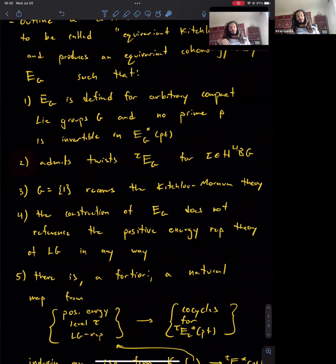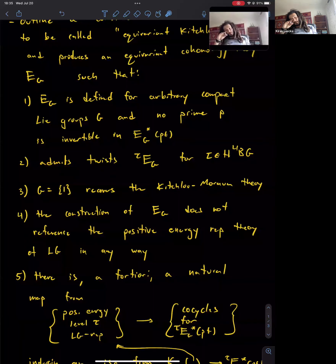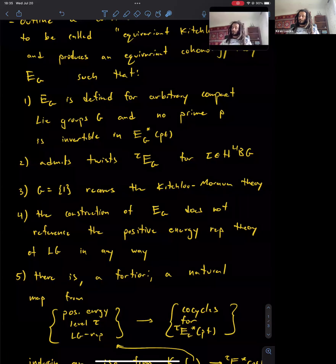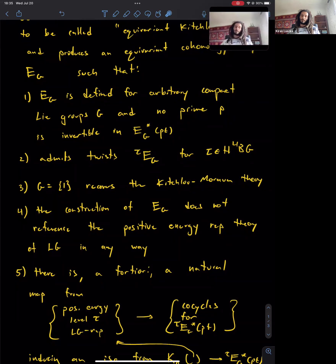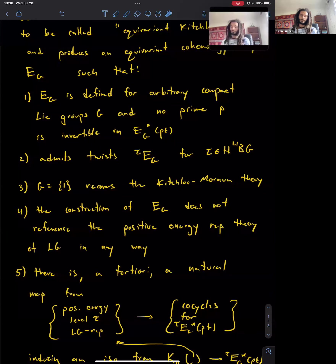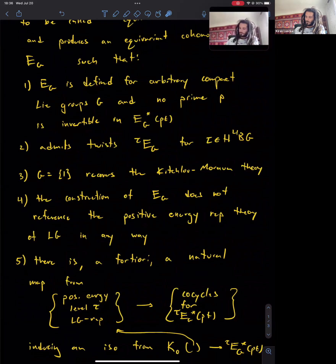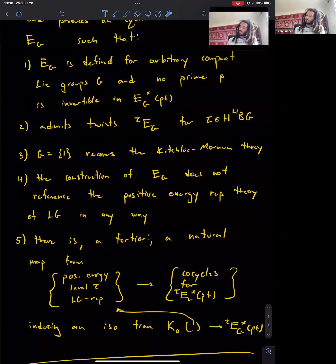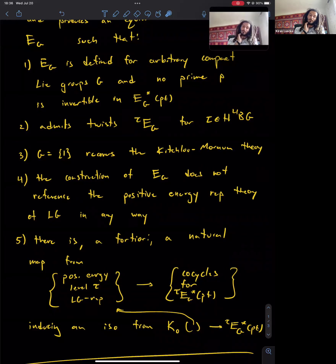The second thing is that this theory will admit twists by elements of degree-four cohomology of the classifying space BG. These are the twists that Charles was trying to build into his formulas, so this thing will be twistable. The third condition is compatibility with the non-equivariant Kischlu-Morava: when I take the trivial group, I recover the Kischlu-Morava theory. The fourth is important: this construction will not use positive energy representation theory of the loop group in any way in its definition.